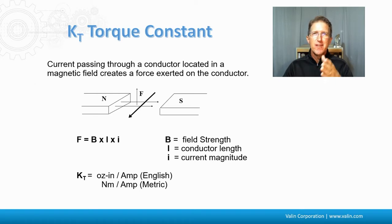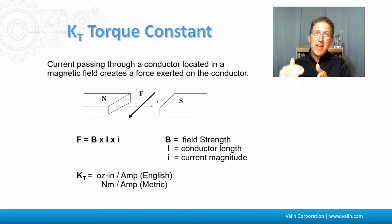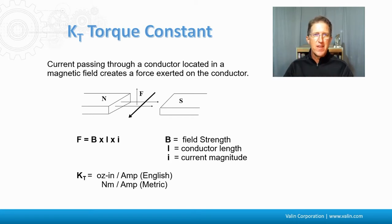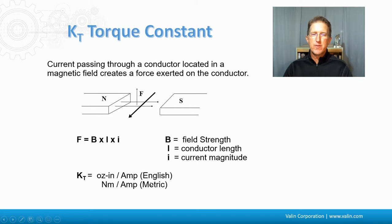In the case of a motor, the conductor — the copper wires — are held steady, and therefore the magnets move. That's how we control the turning of the rotor inside of a motor. This is the product of the field strength times the conductor length times the current magnitude, and it comes in units of either ounce-inches per amp or newton-meters per amp, depending on whether you're using English or metric.